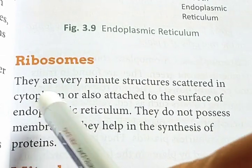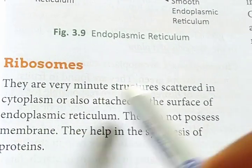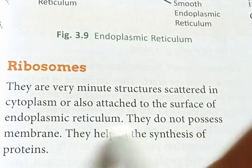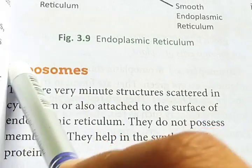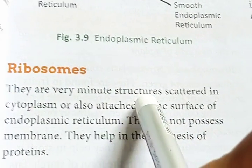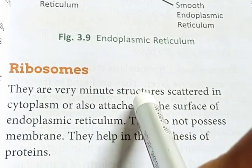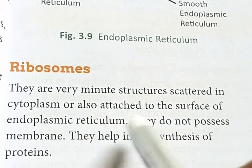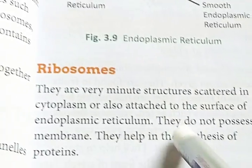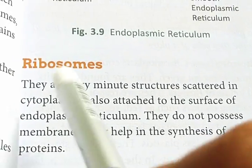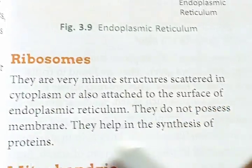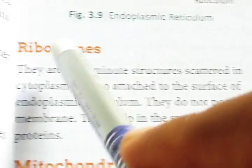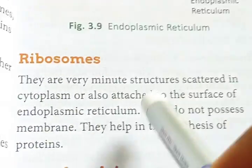Next, ribosome. They are very minute structures scattered in the cytoplasm or also attached with the surface of endoplasmic reticulum. Ribosomes are very minute structures, scattered in the cytoplasm here and there, or also attached with endoplasmic reticulum. They do not possess a membrane — ribosomes have no outer membrane. They help in the synthesis of protein.